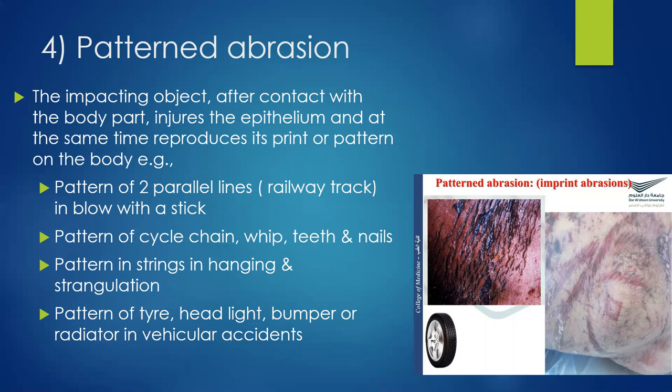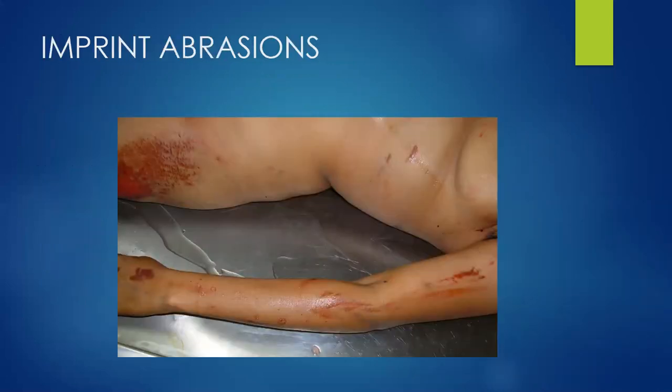Patterned abrasion occurs when the impacting object injures the epithelium and reproduces its print or pattern on the body. A blow with a stick may produce two parallel lines like a railway track. Patterns of cycle chain, whip, teeth, nails, strings used for hanging, and tire, headlight, bumper, or radiator patterns in road traffic accidents may be present. These patterned abrasions have significant medico-legal value.